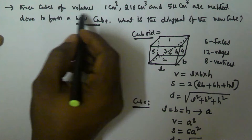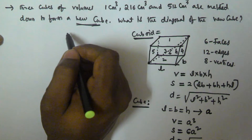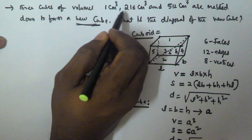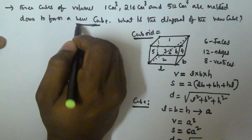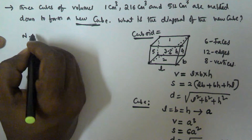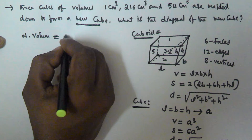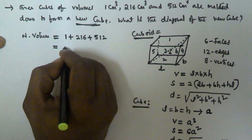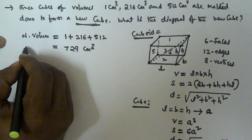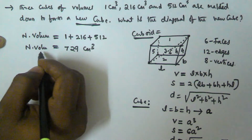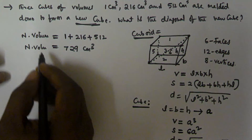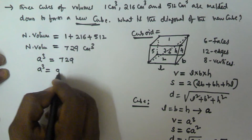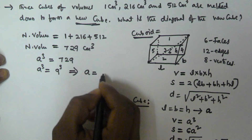Now let's come to the problem. Three cubes of volumes 1 cm³, 216 cm³, and 512 cm³ are melted down to form a new cube. The volume of the new cube equals the sum of the three volumes: 1 + 216 + 512 = 729 cm³. Since A³ = 729 = 9³, the side of the new cube is A = 9 cm.